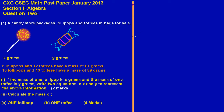For part one, writing the equations is pretty straightforward. They said 5 lollipops — lollipops are represented by X — so that's 5x. The word 'and' in math means to add, so that's a plus. Then they stated 12 toffees; toffees is Y, so that's 12y. They said the sum has a mass of 61, so all of that must equal 61.